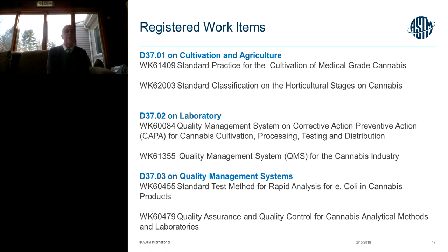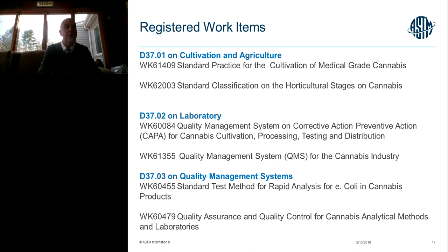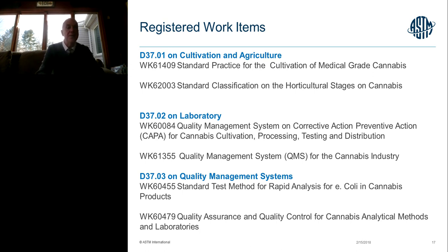The next subcommittee, D37.02 on laboratory, is focused on laboratory practices to make sure that corrective action and preventative action are in place as they deal with cultivation, processing, testing, and distribution of materials — quality management systems will be addressed in the laboratory subcommittee. Working with the laboratory subcommittee, D37.03 on quality management systems is focused on specific topics like developing a standard test method for rapid analysis of E. coli in cannabis products, and various quality assurance and quality control measures needed in the development of analytical methods for laboratories.